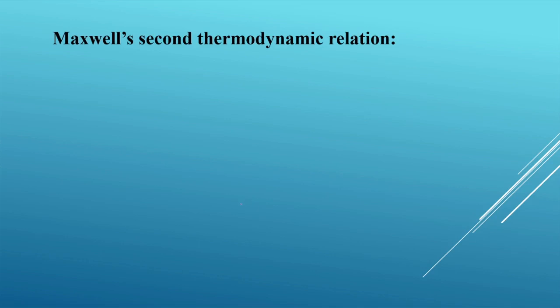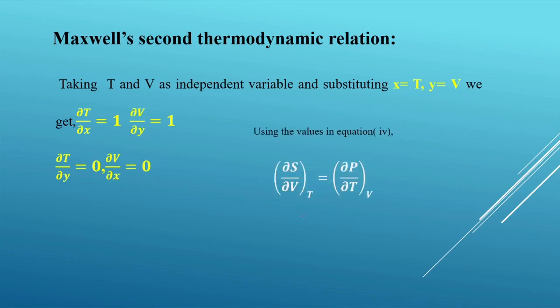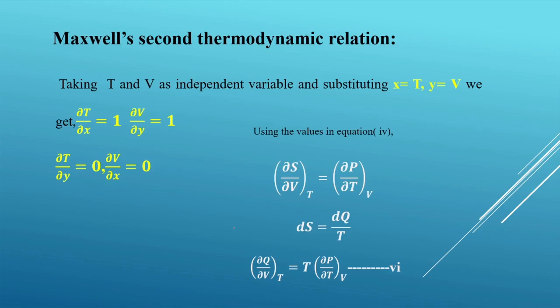For the second Maxwell relation, we take x = T and y = v. We get ∂T/∂x = 1, ∂v/∂y = 1, and ∂T/∂y = 0, ∂v/∂x = 0. Substituting into the general equation gives (∂S/∂v) at constant T = (∂p/∂T) at constant v. Using dS = dq/T, this becomes (∂q/∂v) at T = T·(∂p/∂T) at v. That is our second thermodynamic relation.